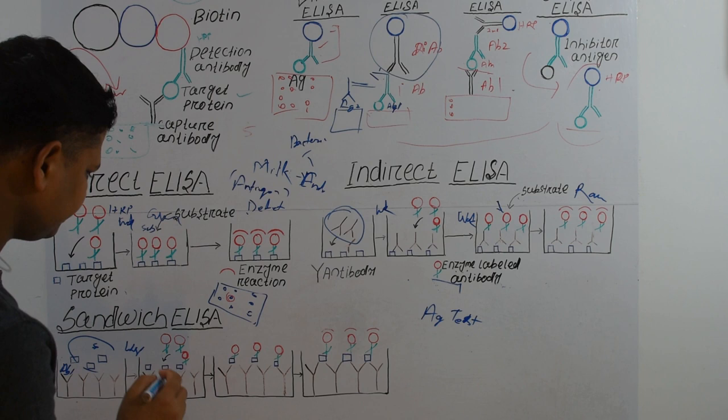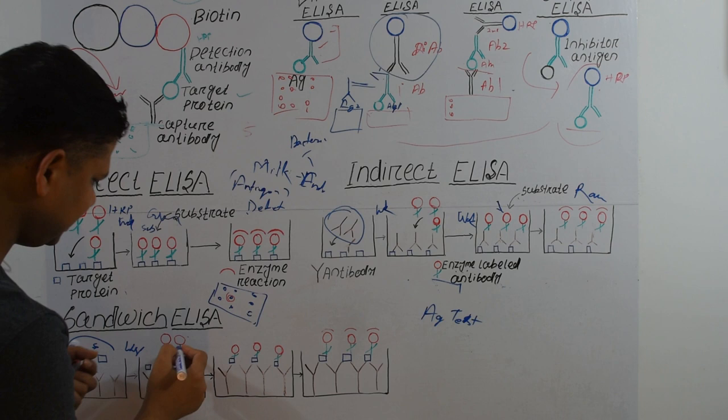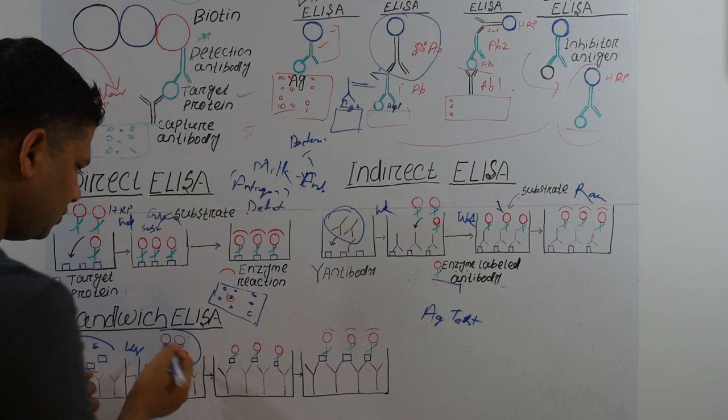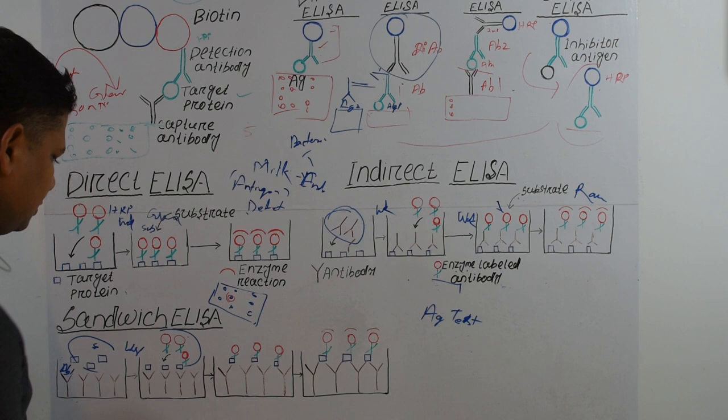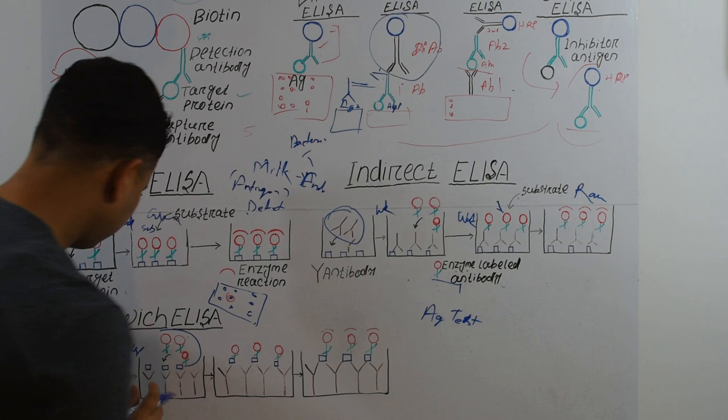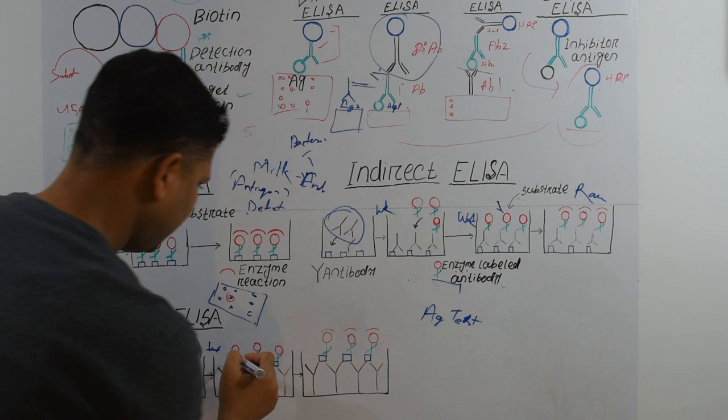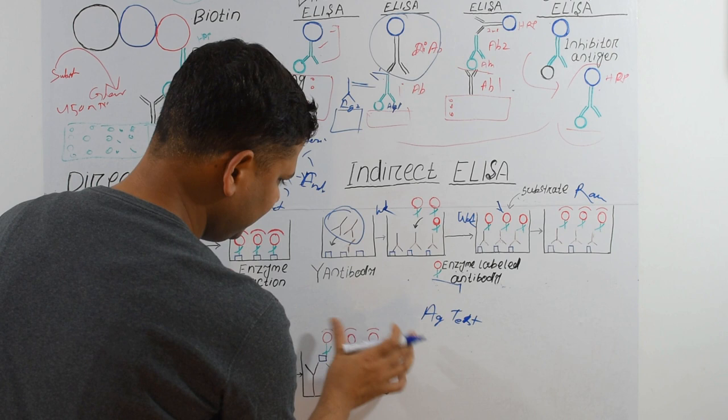We can use a direct sandwich — where the second antibody is directly conjugated with HRP — or an indirect sandwich, where we add a primary antibody followed by a secondary antibody conjugated with HRP, just like Indirect ELISA. For this example we consider the direct sandwich. We then wash, add substrate, wait for the reaction, and detect it using the plate reader.